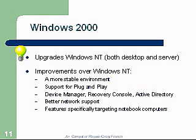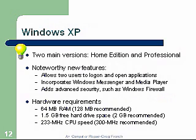Windows XP has two main versions: Home Edition and Professional. Noteworthy new features include allowing two users to log on and open applications simultaneously, incorporating Windows Messenger and Media Player, and adding advanced security such as Windows Firewall — which was introduced with Service Pack 2. Hardware requirements: 64 megabytes of RAM minimum, though at least 500 MB is needed today and 1 GB is best; 1.5 GB of free hard disk space minimum, though 10 GB is recommended and 20 is better; and the CPU probably needs at least 1 GHz to run efficiently. The desktop is a huge improvement over Windows 98 and ME.